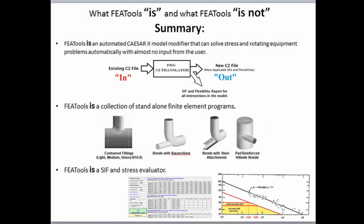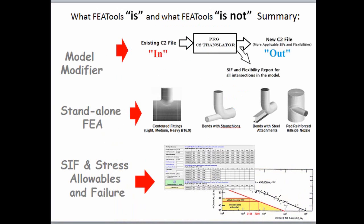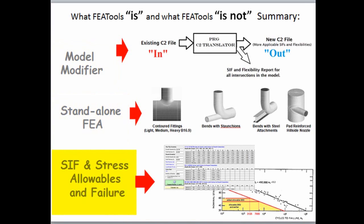FEA tools is also a CIF and stress evaluator that helps answer the basic question: how good are my CIFs and what is more applicable data? To emphasize, FEA tools is really three major separate tools: a CAESAR II file modifier that converts one CAESAR II file into another, a stand-alone FEA component analyzer in accordance with ASME Section 8 Division 2 Part 5, and a stand-alone CIF and stress allowable and failure calculator.